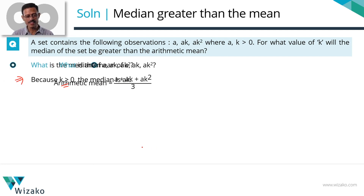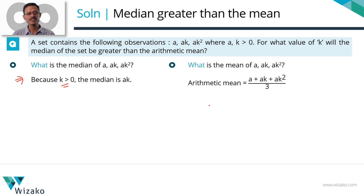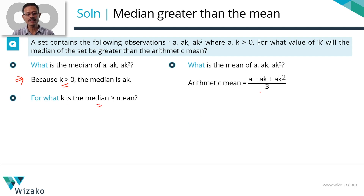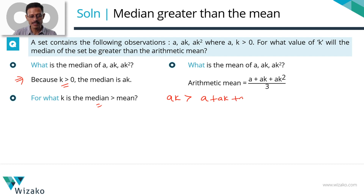What is the mean of these three numbers? The mean is the sum of the numbers divided by 3, which is (A + AK + AK²) / 3. What we need to find out is for what value of K will AK, the median, be greater than this mean. So we need to find the value of K for which AK > (A + AK + AK²) / 3.